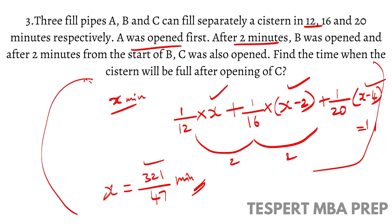This means the cistern will be filled in 321/47 minutes after opening pipe C. We discussed a similar pattern in time and work, and we can apply the same model here. After watching this video, practice problems from your material or visit our portal, where we are uploading topic-wise tests. Advanced sessions of arithmetic will start in two to three days, so make sure your basics are strong.